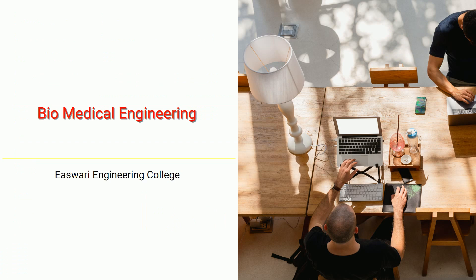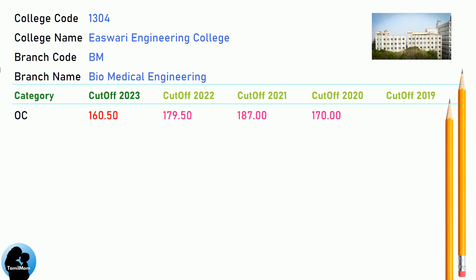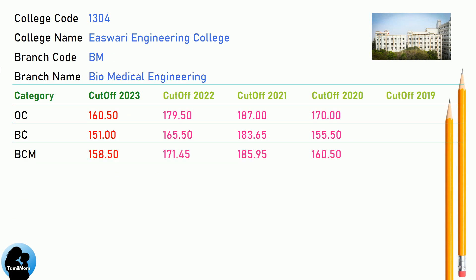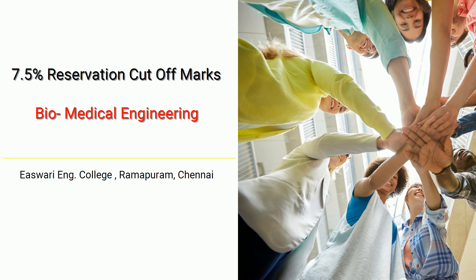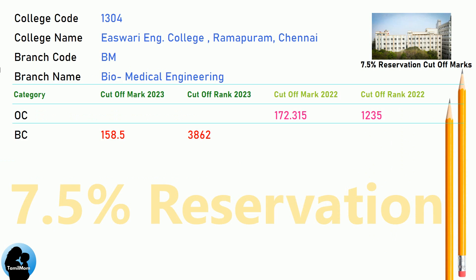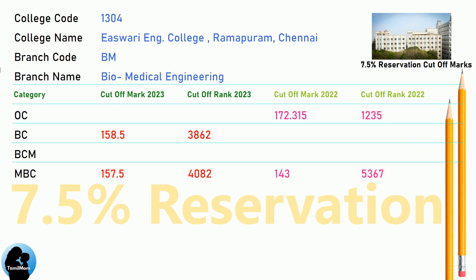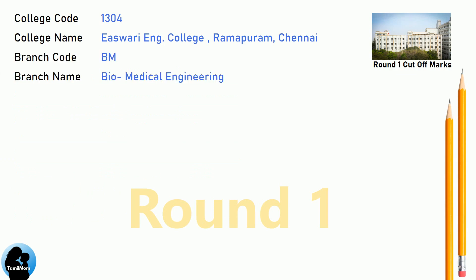DNA Cut-Off for Eshwari Engineering College in Biomedical Engineering. DNA 7.5 Reservation Cut-Off for Eshwari Engineering College in Biomedical Engineering. DNA Round 1 Cut-Off for Eshwari Engineering College in Biomedical Engineering.